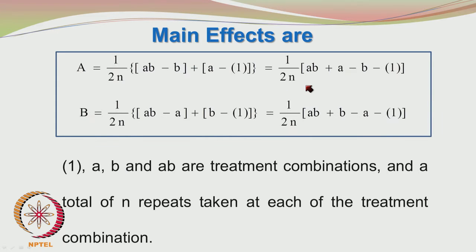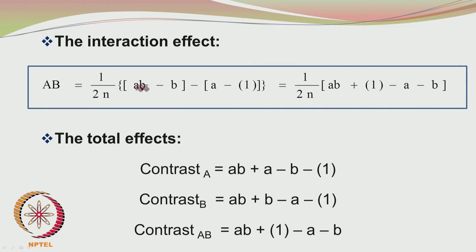When we go for more factors, we get more terms, but the same concept applies. We call the term inside the brackets as contrasts. AB + A - B - 1 is a contrast for A. AB + B - A - 1 is the contrast for B. The contrast for A has A and AB positive, while B and 1 are negative.